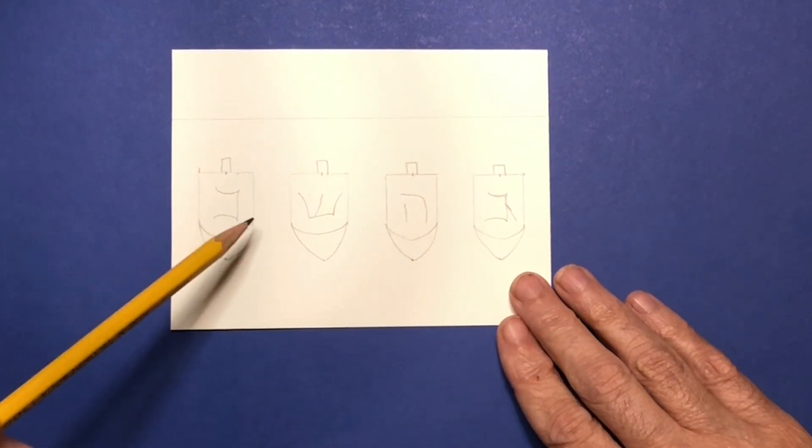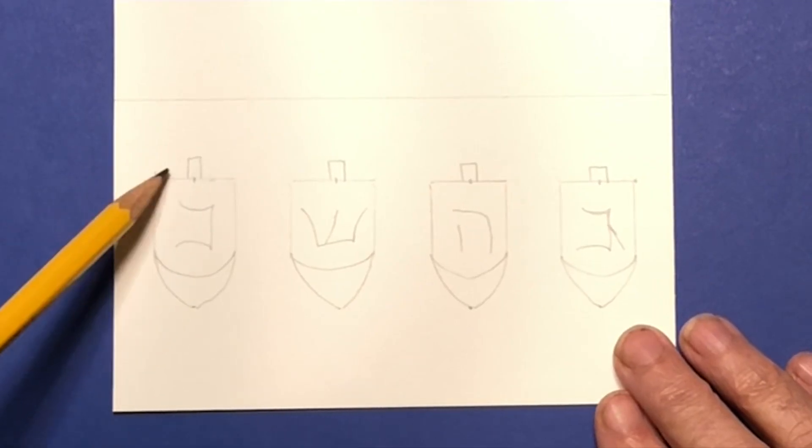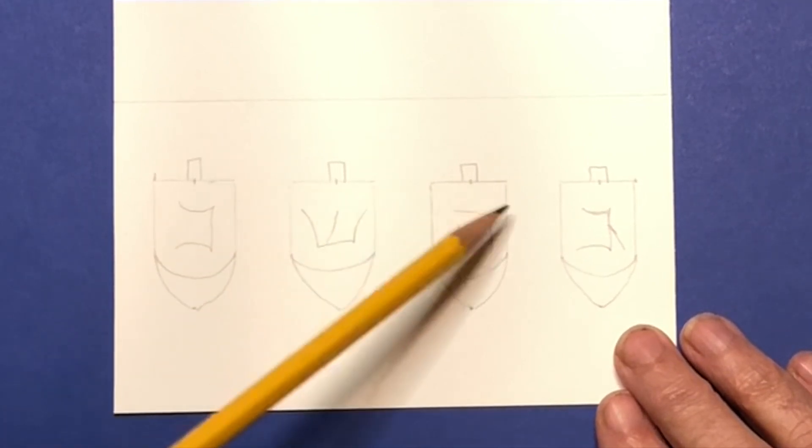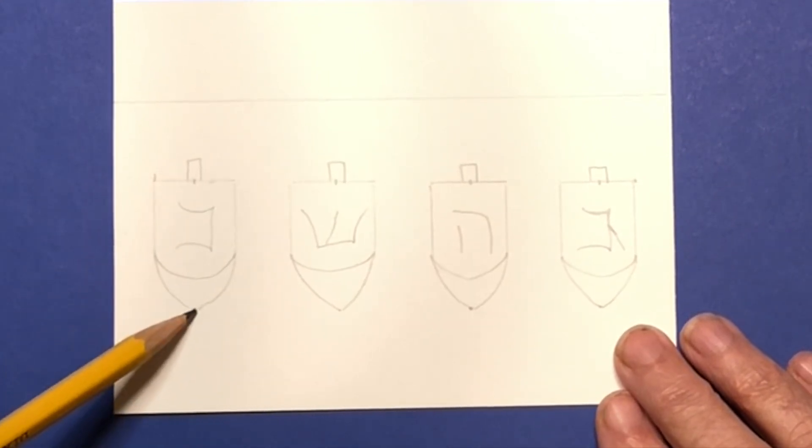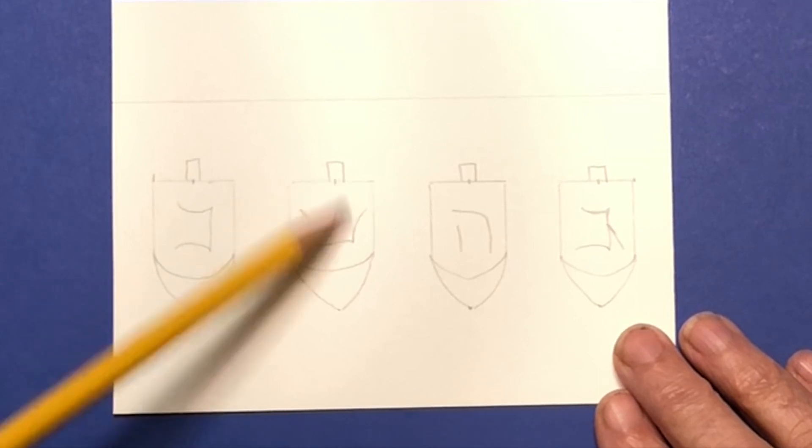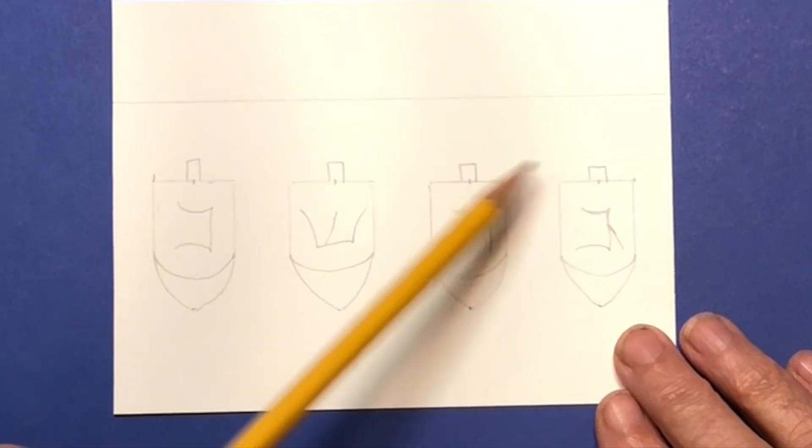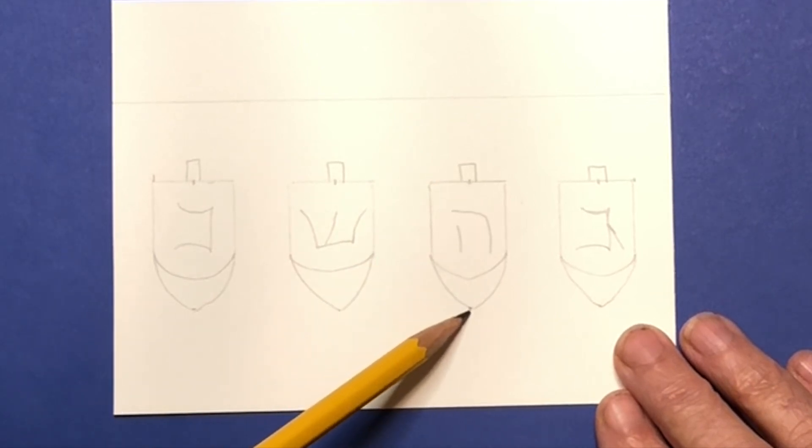That's it. Those are the four letters that are on the dreidel. So I hope you're able to follow along for this. Again, it's three quarter, three quarter on each side. One and a quarter all the way to the bottom. One and a quarter, one and a quarter, one and a quarter.